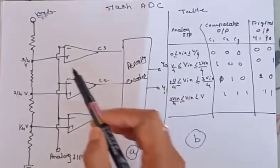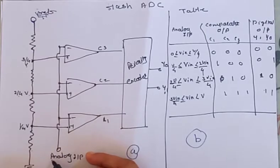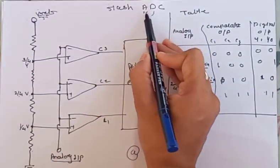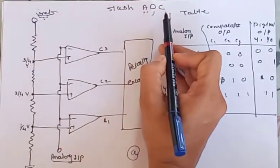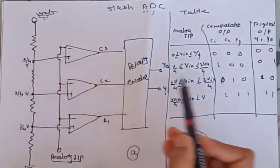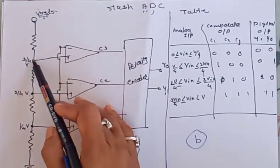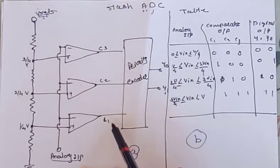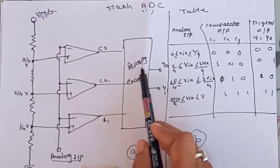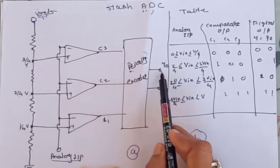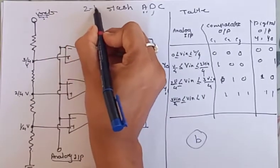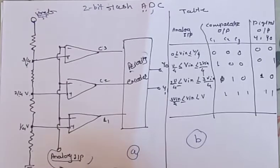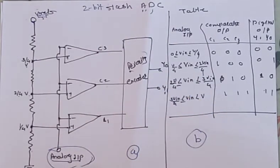This flash ADC uses 3 comparators. The negative terminals of the comparators are shorted together and the analog input is applied there, because in ADC the analog voltage must be converted into digital form. The positive terminals of the comparators are connected to the reference voltages. The outputs C1, C2, C3 are applied to a priority encoder. This is a 2-bit flash ADC, meaning the analog input is converted into a 2-bit digital output.